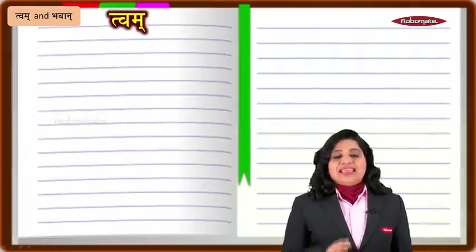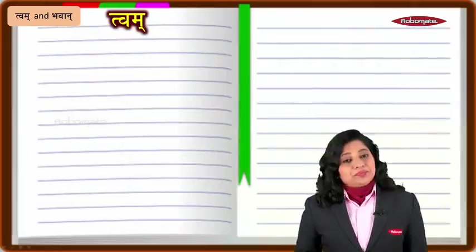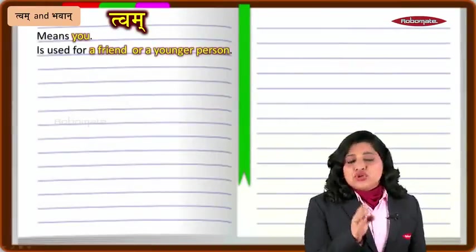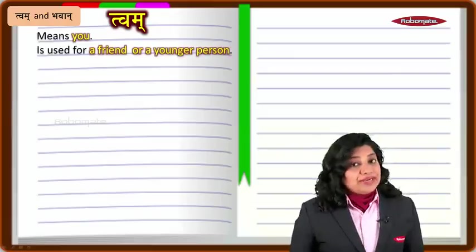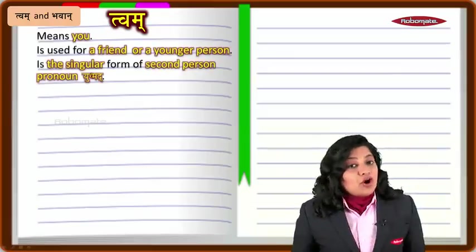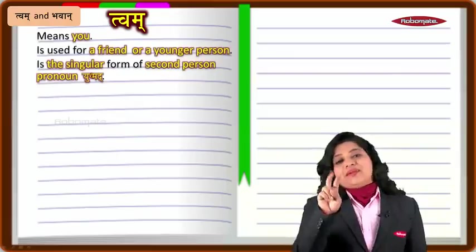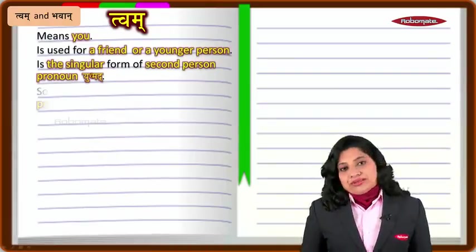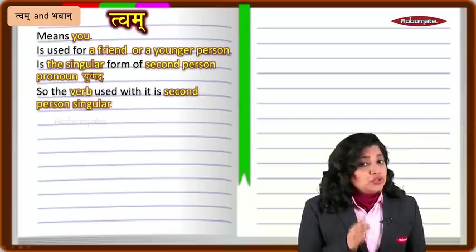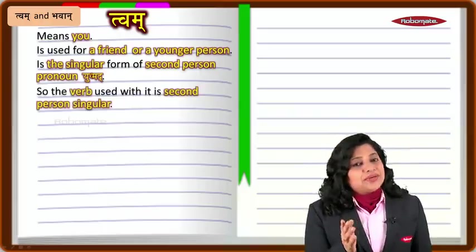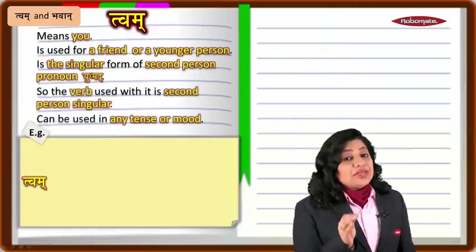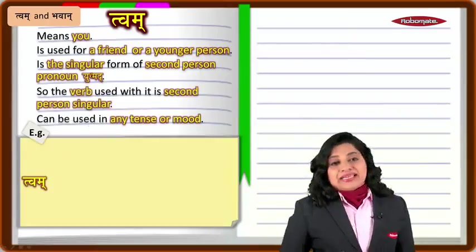The word twam means 'you.' It is used for a friend or a younger person. It is the singular form of the second person pronoun 'yusmad.' When the verb is used with twam, it takes the second person singular form. This can be used in any tense and mood.